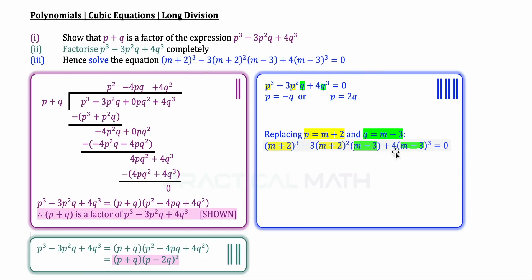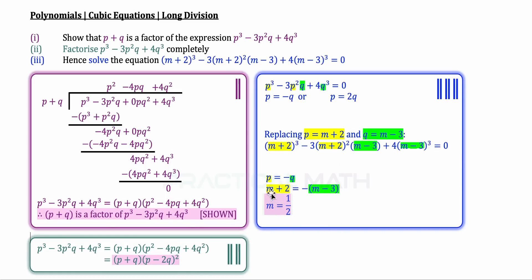Since p equals n plus 2 and q equals n minus 3, we substitute into our two solutions. First, p equals negative q: n plus 2 equals negative of n minus 3, solving for n gives n equals one half. Second, p equals 2q: n plus 2 equals 2 times of n minus 3, solving for n gives n equals 8. So n equals one half or n equals 8 — that is the answer for part 3.